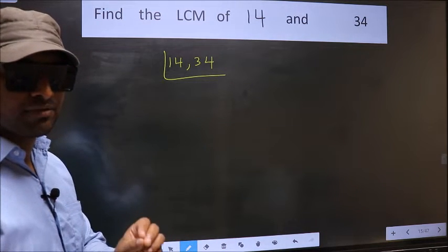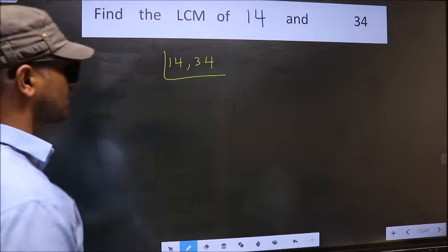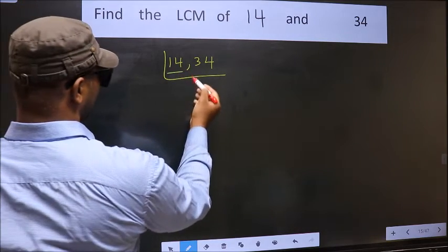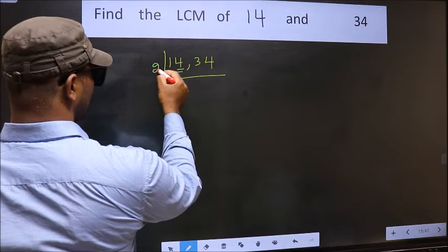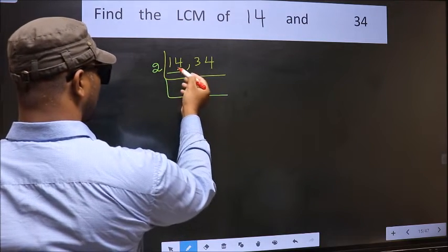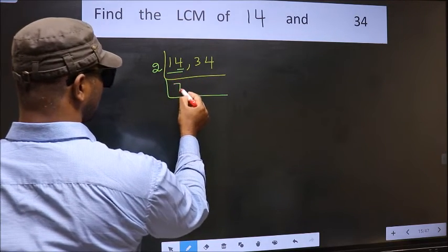Now, you should focus on the first number which is 14 here. For this number, last digit 4, E1, so take 2. When do we get 14 in 2 table? 2 7's 14.